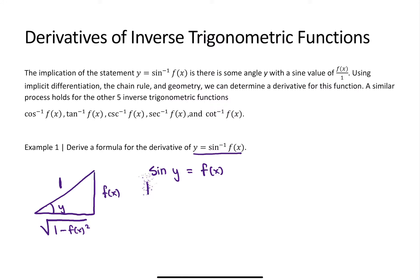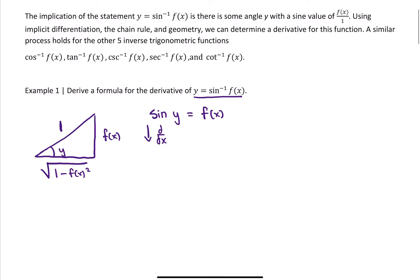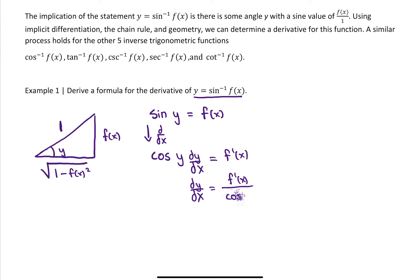If we did the Pythagorean theorem, we would get that the adjacent side is the square root of 1 minus f of x squared — that's a squared plus b squared equals c squared. This statement is the exact same thing as saying the sine for angle y is equal to some function f of x. If we do a derivative on both sides of this equation, we would get, by implicit differentiation, cosine y times dy over dx is equal to f prime of x.